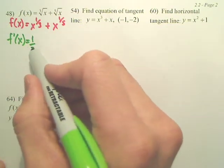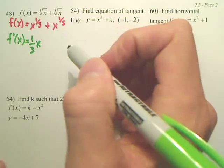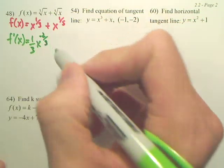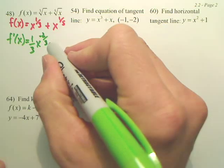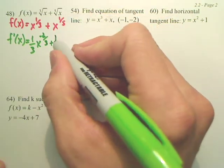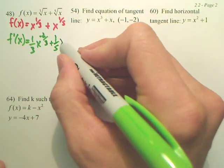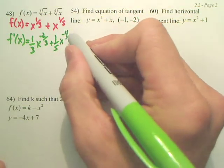You take the 1/3, put it out front, subtract 1 from 1/3, and you get negative 2/3. Plus, take the 1/5, put it out front, subtract 1 from 1/5, and you have negative 4/5.